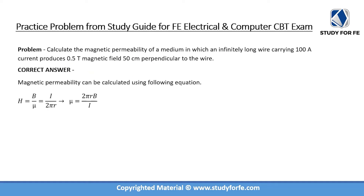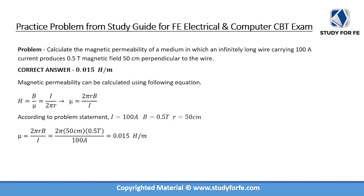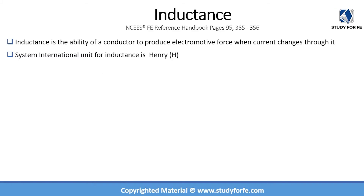Using H = B/μ = I/(2πr), we rearrange to find μ = (2πr × B) / I. With I = 100 A, B = 0.5 T, and r = 50 cm = 0.50 m, substituting these values gives a magnetic permeability of 0.015 henries per meter.